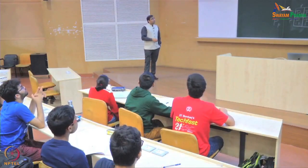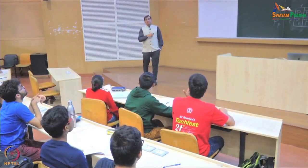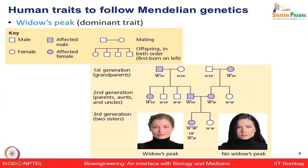Many human traits follow Mendelian inheritance. For example, one is known as widow's peak — the sharp hairline shown here. This property is observed in many families and these are dominant traits which are being followed, always following the Mendelian laws of inheritance.